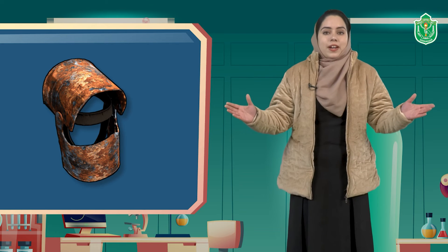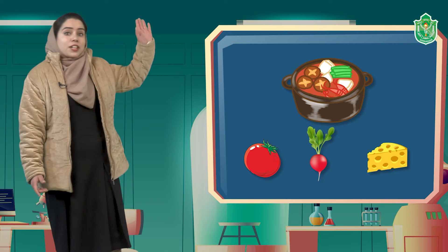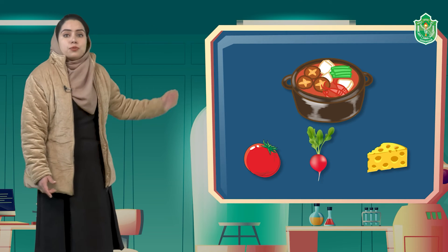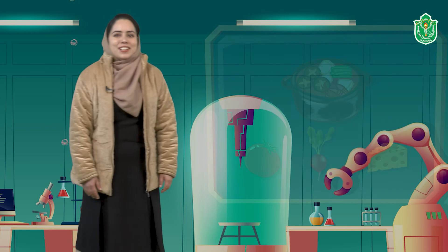Similarly, rusting of iron — we cannot change it back into new iron. Similarly, cooking of food — once you cook vegetables at home, it is not possible to get back the raw food. Such changes are known as chemical changes.